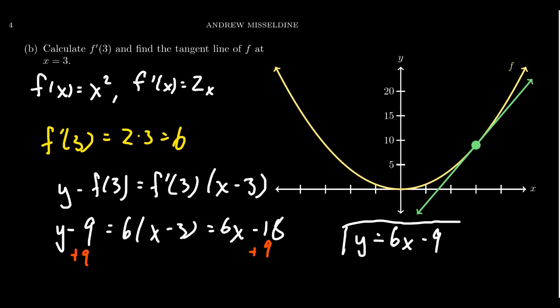For which you can see on the graph exactly that right here. Here's our point three common nine on the graph. Illustrated in green is the tangent line. And sure enough, when we take the slope to be six or the y intercept to be negative three, we get the correct tangent line for the graph. Notice how it's just barely touching, just kissing the function there at the point three common nine.